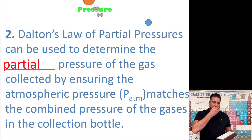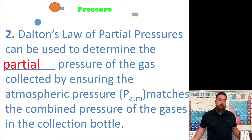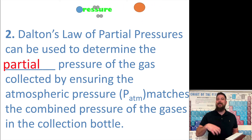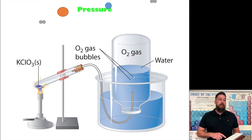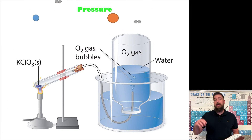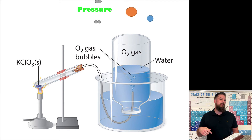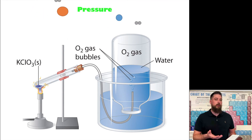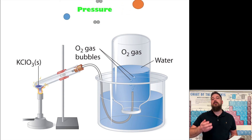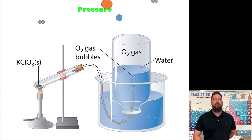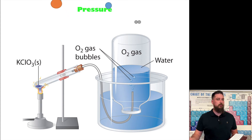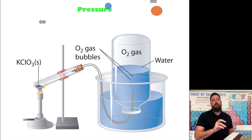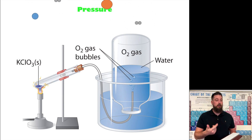You can use Dalton's Law of Partial Pressure to determine the pressure of the gas that you're collecting. Inside that container, the oxygen gas and the water vapor together create a certain total pressure. If you know that total pressure and you know the pressure of the water vapor, you can calculate the pressure of the oxygen gas. It's going to be really important to calculate just the pressure of the oxygen gas and not the combined pressure of the oxygen gas and the water.